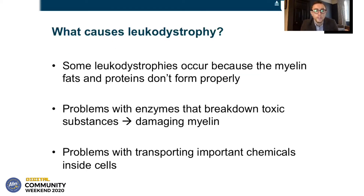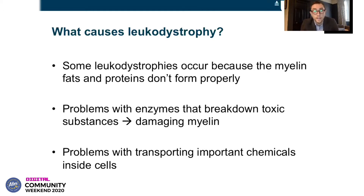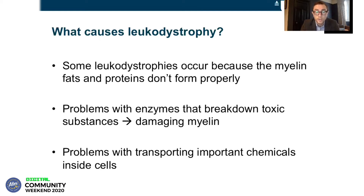So what causes leukodystrophies? Some leukodystrophies occur because the myelin fats and proteins don't form properly. In some leukodystrophies, there are problems with enzymes that break down toxic substances, so those substances accumulate and can be toxic to myelin and cause it to break down. And sometimes leukodystrophies occur because there are problems inside the cells in transporting chemicals from one place to another where they're needed for the cell to function properly. There are very many causes of leukodystrophies — genetically, there are probably at least a hundred different forms, and many that are not yet discovered.